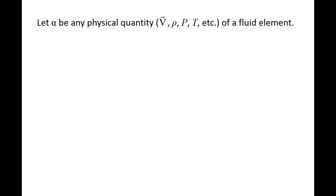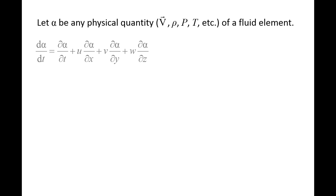In the derivation, we started by examining the velocity of a fluid element. However, we would arrive at a similar relationship had we been examining a different quantity such as density, pressure, or temperature. So we can replace the velocity v with a generic quantity, alpha.